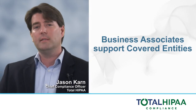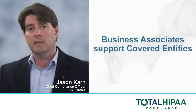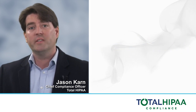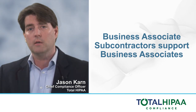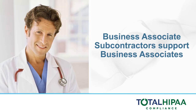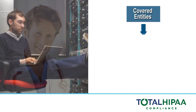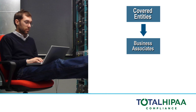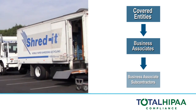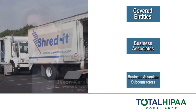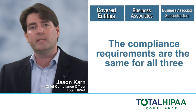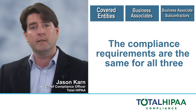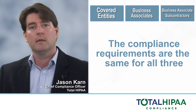Business Associates are businesses that support covered entities. Business Associate Subcontractors are vendors that support Business Associates. A good rule of thumb is: covered entities have Business Associates, and Business Associates have Business Associate Subcontractors. The compliance requirements for Business Associates and Business Associate Subcontractors are now the same as for a covered entity.